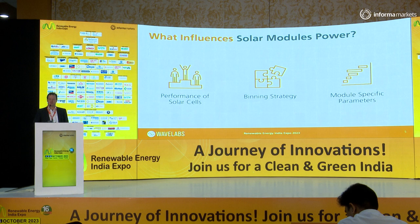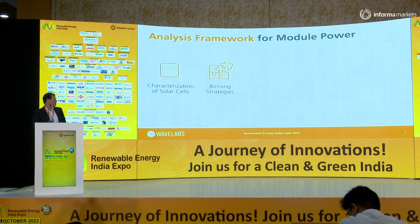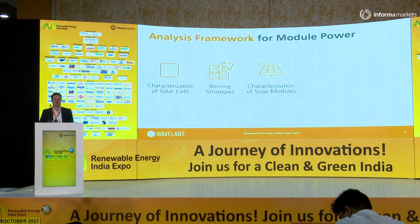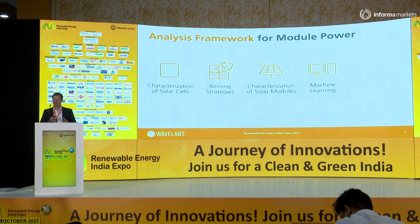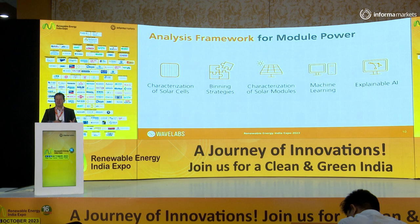To analyze these three different steps, we came up with a modeling framework that consists of five different steps. We start with the characterization of solar cells. Next, we bin the cells with different strategies and produce solar modules. Then we characterize the solar modules, and to analyze this information, we give all these different parts to machine learning models. These machine learning models understand the hidden correlations between these different steps. In the last step, to make this visible for us again, we give it to explainable AI, which analyzes the trained machine learning models. This is the principal core of our modeling approach.